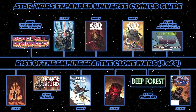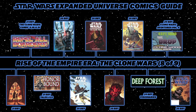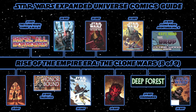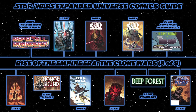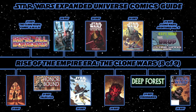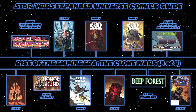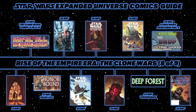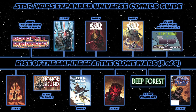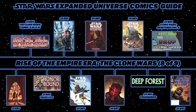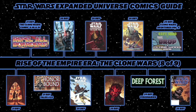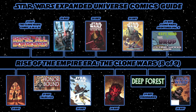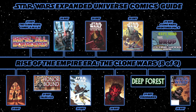Back to the Clone Wars graphic novella series with The Smuggler's Code, then The Sith Hunters — set shortly after the Clone Wars episode Revenge. Then the four-issue miniseries Darth Maul: Death Sentence, set between The Sith Hunters and the Clone Wars Season 5 premiere Revival. Then the final Clone Wars digest-sized graphic novella, Defenders of the Lost Temple.